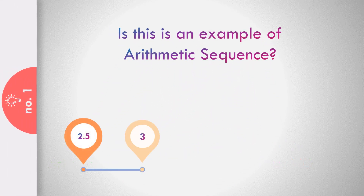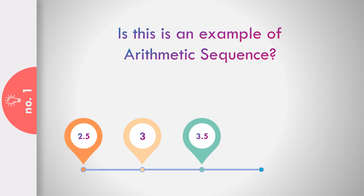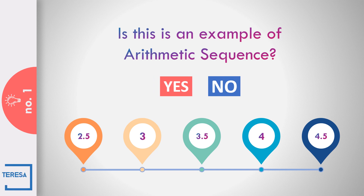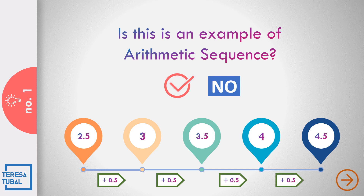Question number one: Is this an example of arithmetic sequence? 2.5, 3, 3.5, 4, and 4.5? Correct. The answer is yes, because the common difference from first up to the last term is 0.5.